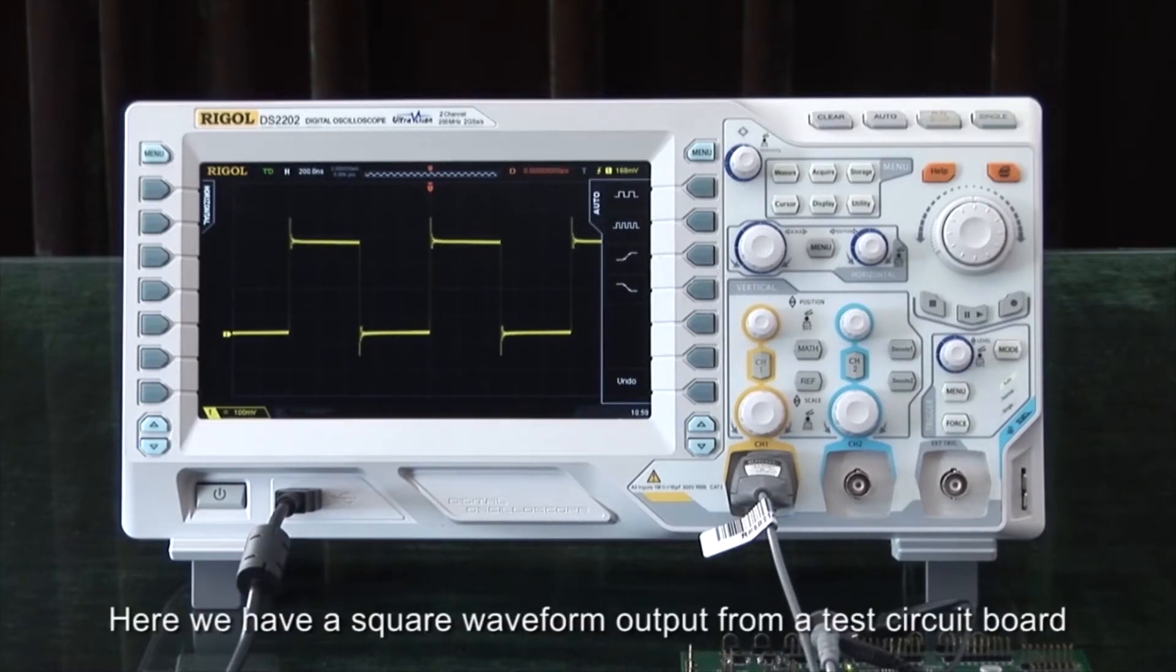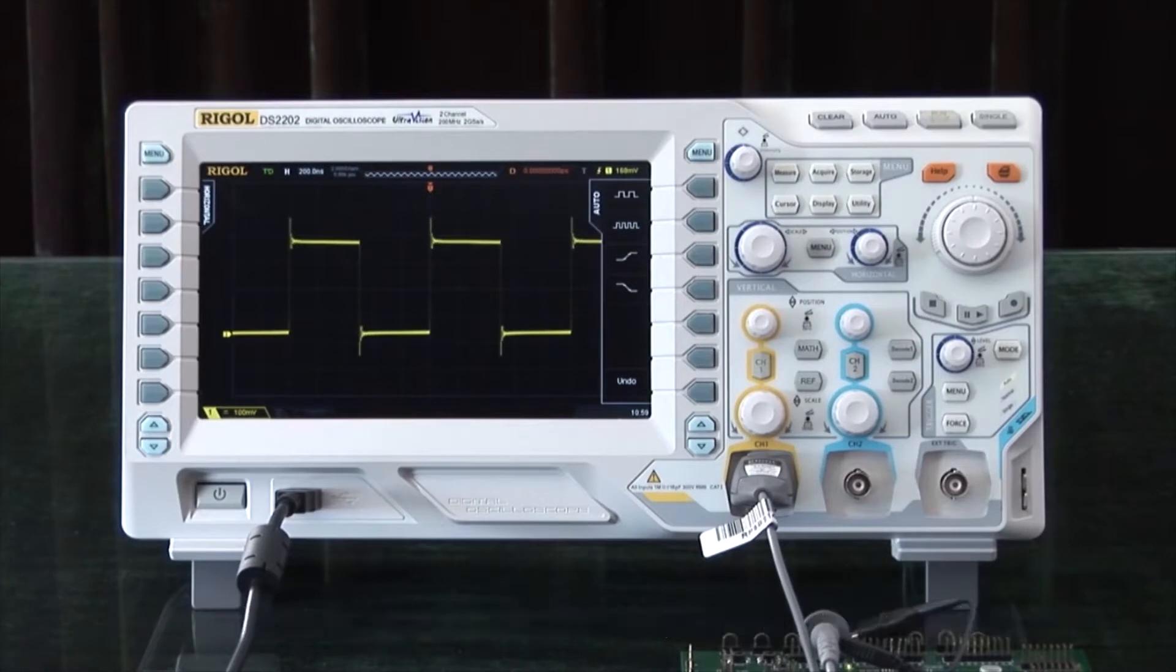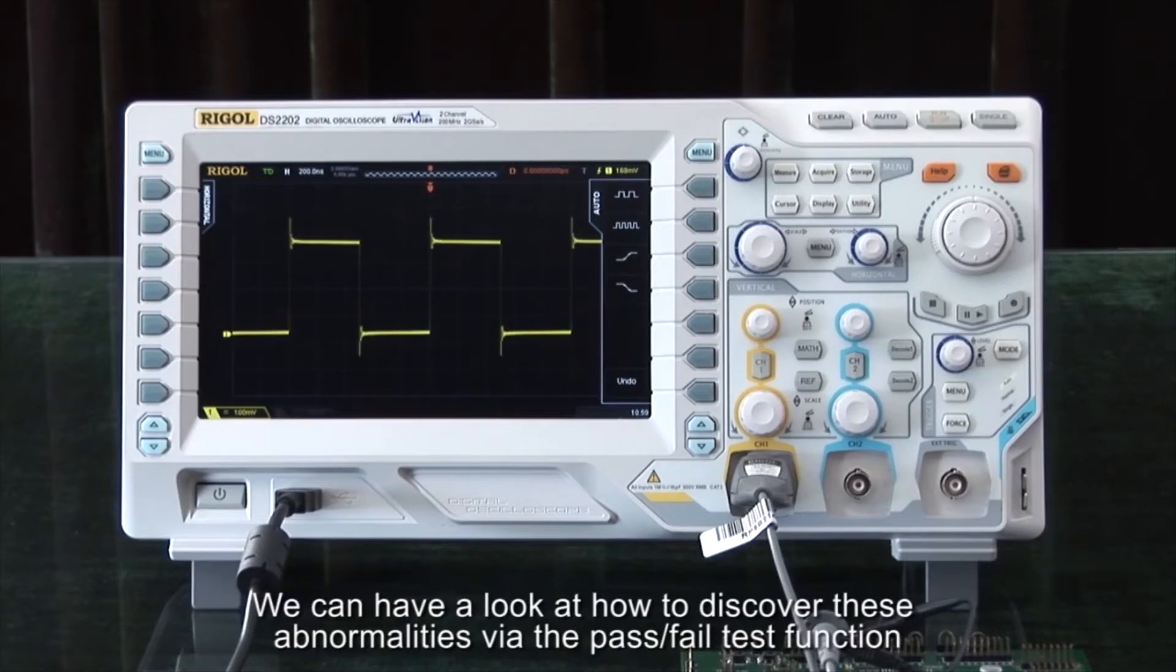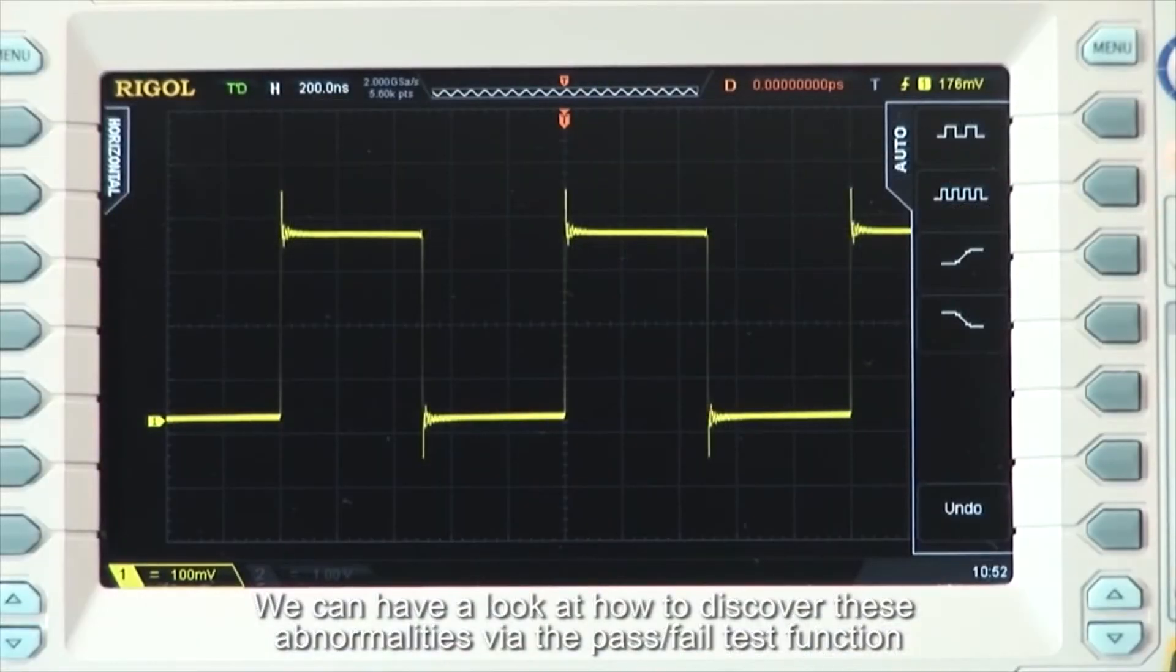Here we have a square waveform output from a test circuit board. It features an abnormality every 100,000 periods. We can see how to discover these abnormalities using the pass-fail test function.